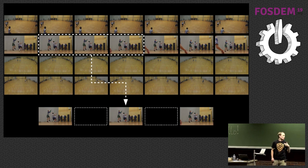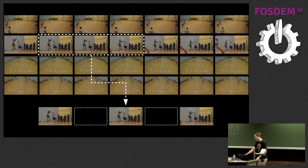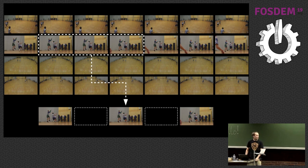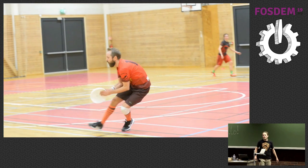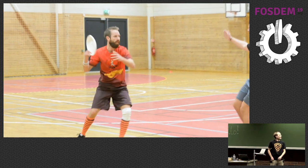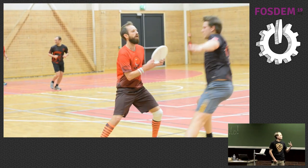We also wanted slow motion, which raises the question: we have the unmodified frames, and we want to slow down by 2x — but what do we do with the frames in between? The obvious first choice is to repeat frames — twice, three times, four times as needed. And that looks like this. It's very, very choppy and not really something you want to show people.